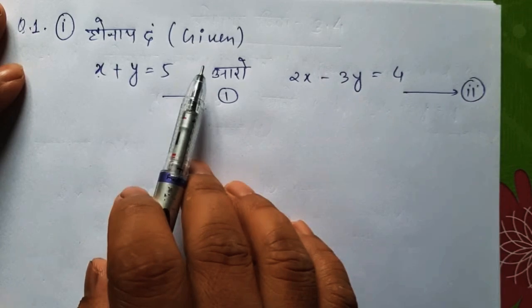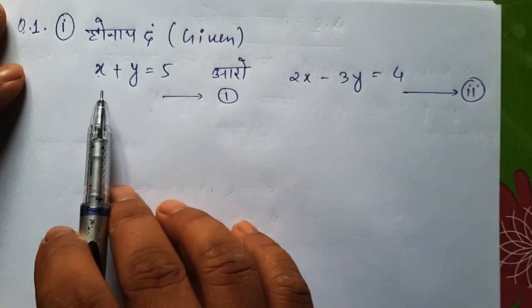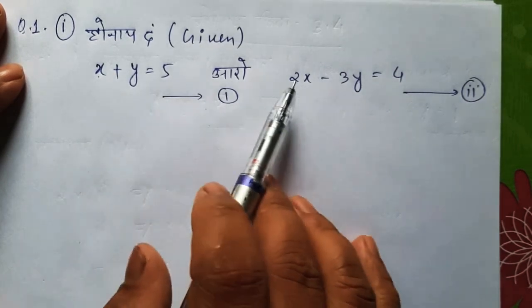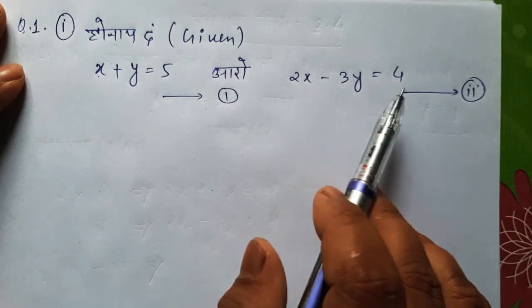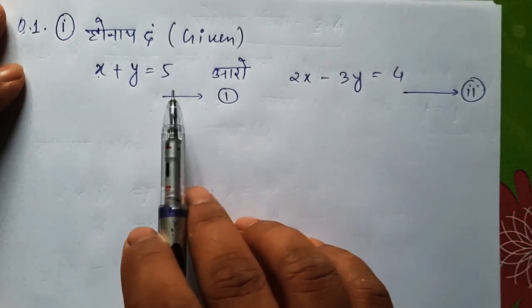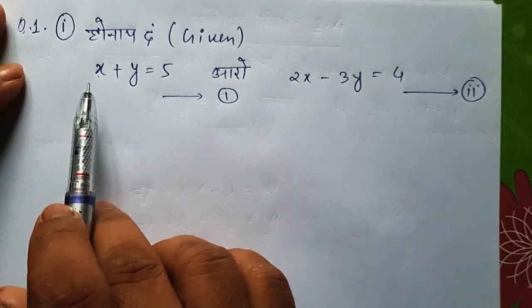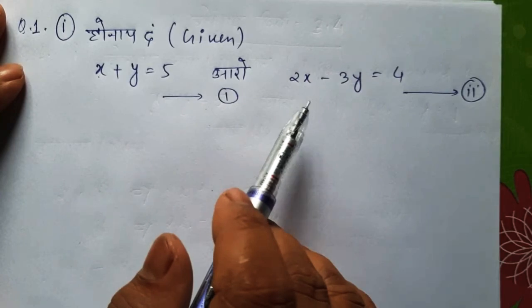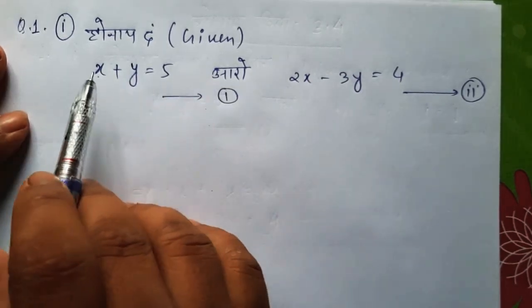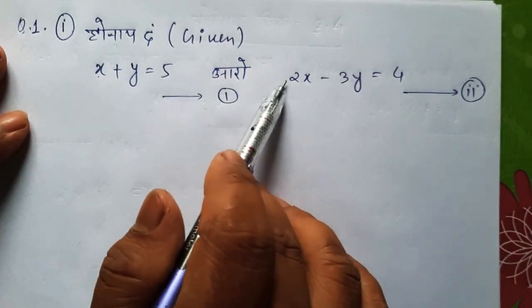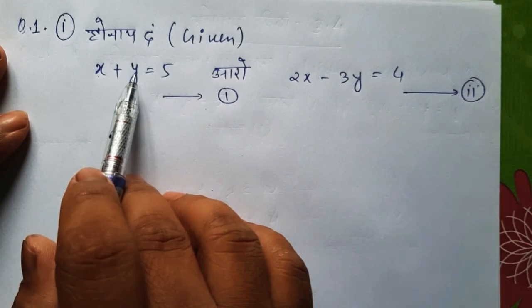The question is: x plus y equals 5 and 2x minus 2y equals 4. We will use these two equations. We call the first one equation 1 and the second one equation 2.